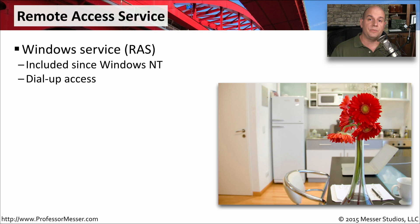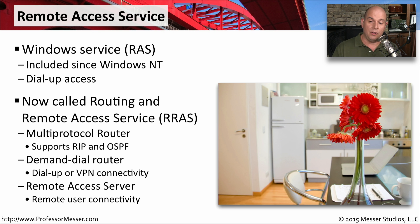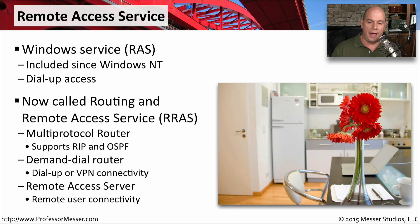Things have changed a lot since the Windows NT days, so Microsoft has also improved RAS. It's now called the Routing and Remote Access Service, or RRAS. That routing part at the beginning means that this remote access server can be a multi-protocol router running dynamic protocols such as RIP and OSPF. You have a demand-dial router inside of it so that you can connect to it with VPN connectivity.